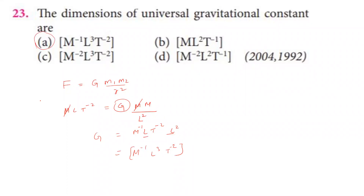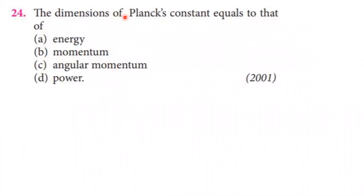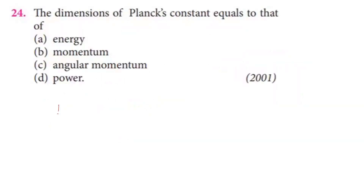Next question: the dimensions of Planck's constant equals the dimension of what? Planck's constant dimension is ML²T⁻¹. The dimension formula ML²T⁻² corresponds to energy, and momentum dimension formula is MLT⁻¹.